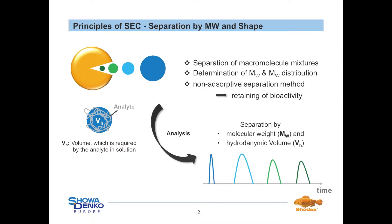Consequently, solvated polymers with small hydrodynamic volumes can diffuse into every accessible pore. Therefore smaller compounds will retain longer on the column and elute later than bigger compounds, which can only diffuse into the larger pores.